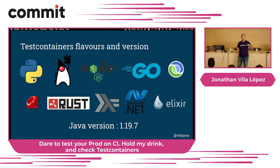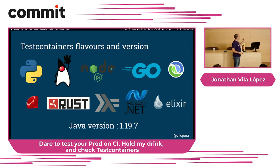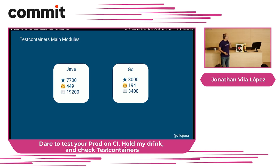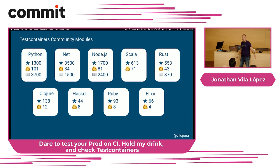Test containers comes with a lot of pre-built modules and can run on many languages. Some are main languages like Java and Go, and the rest are community-driven language support — including Go, Rust, and many others. For the Java version, the latest is 1.19.7. Java has more than 400 contributors and Go has almost 200, so both are very active projects. Community ones include Python with more than 100 contributors down to Elixir with four. There are lots of languages covered.